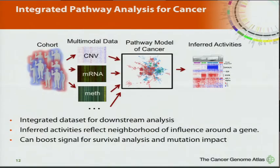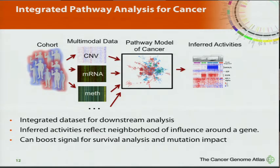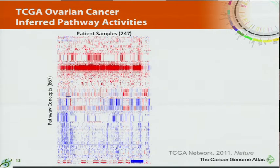The big picture: we take a cohort of patients, various types of data, run it through our pathway models, and produce one matrix that we can do analysis on. We don't have to think about all these different modalities anymore — we can just ask, is the gene active in this sample, and provide this new matrix for analysis.